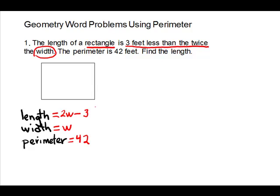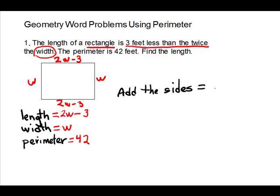Let's label our picture. The two longer sides are 2w minus 3, and the two shorter sides are w. To make our equation we'll use the definition of perimeter — adding the outside edges gives us the distance around. So we add all the sides: 2w minus 3 plus w plus 2w minus 3 plus w, which equals perimeter.